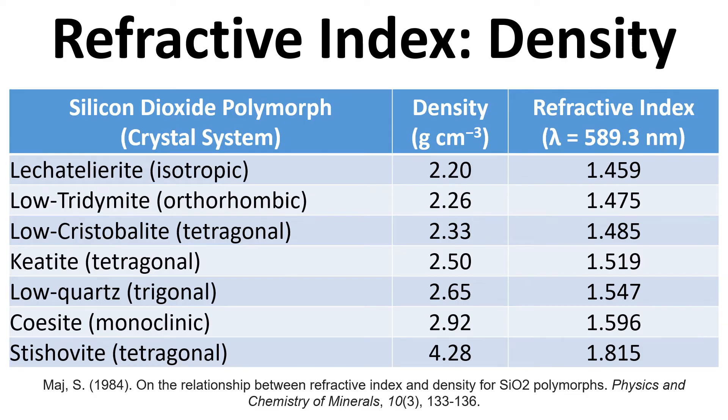In terms of refractive index and density, we've got some silicon dioxide polymorphs here. These are all made from SiO₂, but what's different is the way that is arranged. You can see that the density varies for these different polymorphs and the refractive index itself also varies.